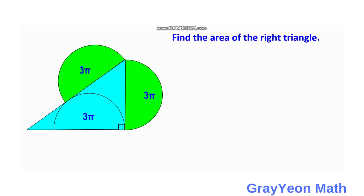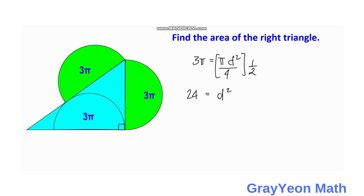First, we need to find the dimensions of the semicircle. We have the area as 3π, and working through the formula for the area of a semicircle, we find that the square of the radius gives us values such that the diameter of the semicircle works out to 2√6.